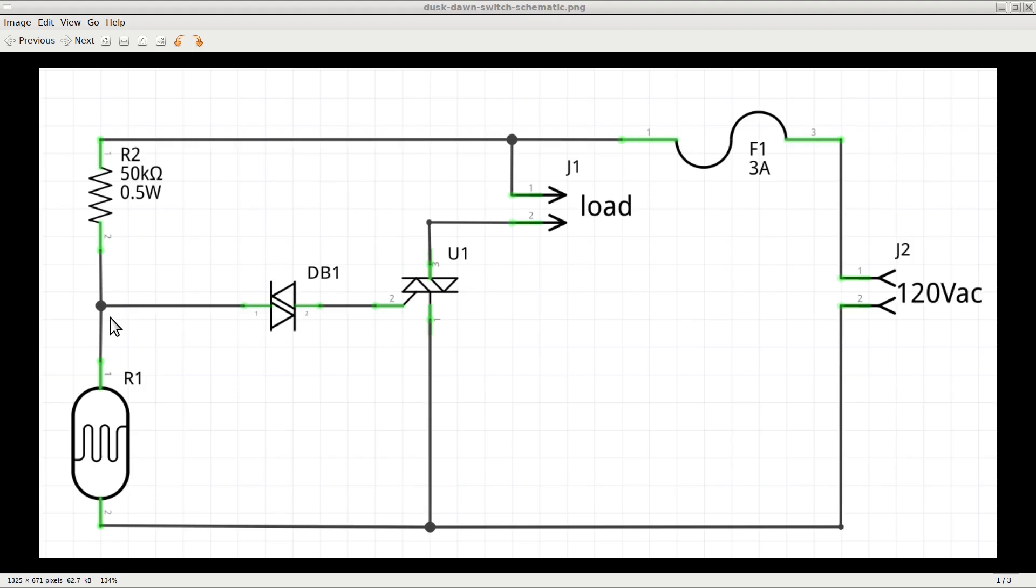It is at this point that the diac starts conducting and it triggers the triac. The triac, in turn, will let the current flow through the load, thus turning on the lights.